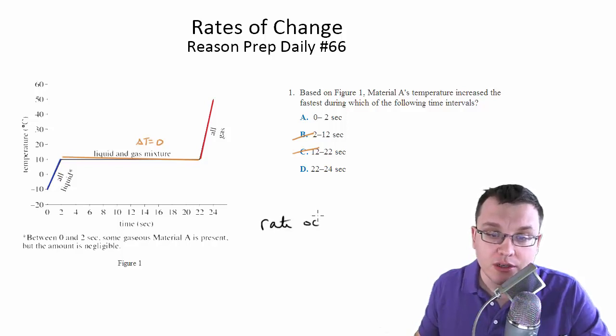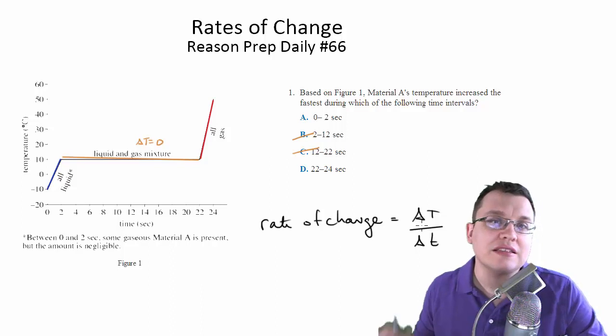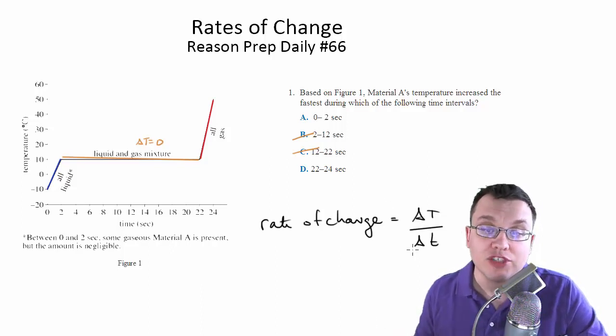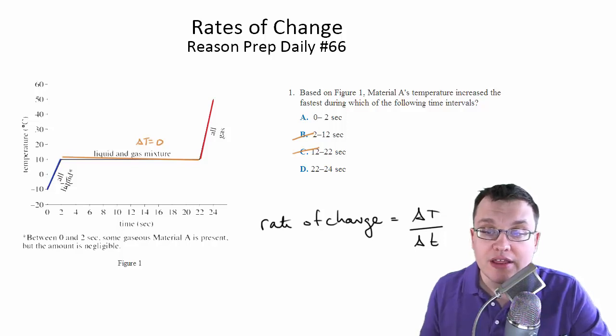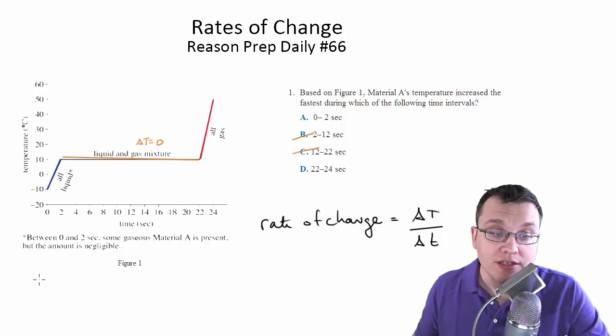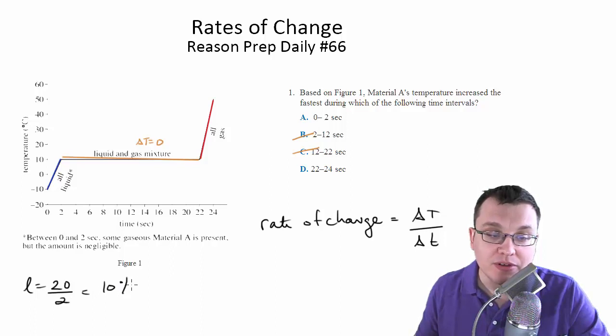So the rate of change in this case is going to be the change in the temperature over the change in time, right? It's the degrees per second is your rate of change. So we can compare both of these along those lines. Notice the all-liquid region. It's changing 20 degrees in 2 seconds. So that's going to be 10 degrees per second.